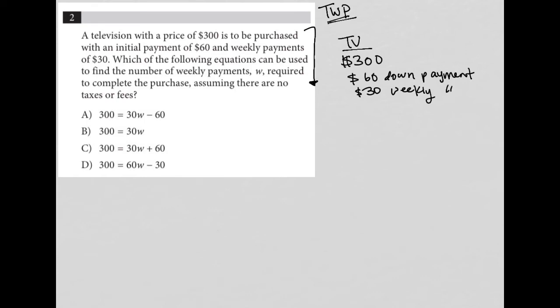Okay, so in essence, after the down payment, the TV is down to $240. And then we're subtracting from that $30 per week. So it's another way to write it.